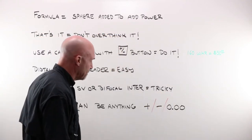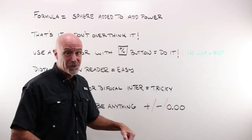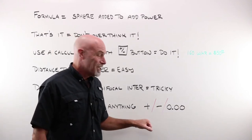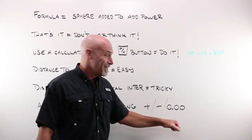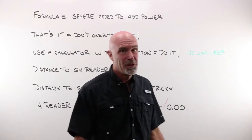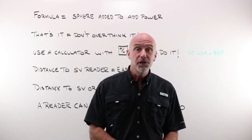Remember that a reader can be anything. Yes, the total powers, sphere powers, cylinder powers. They could be plus, they can be minus. Heck, it could even be plano. Let's run through some examples of conversion.